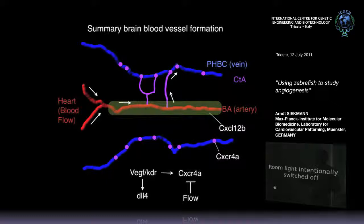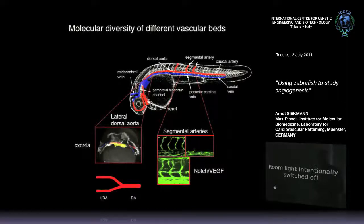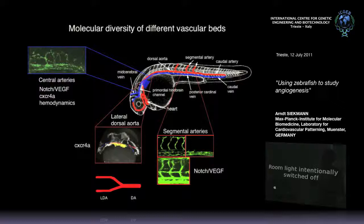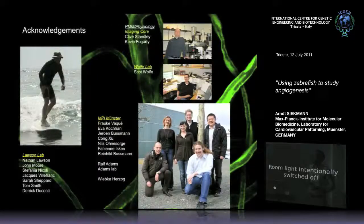We place blood flow, in addition to genetic components, as a key regulatory factor determining CXCR4A expression at later stages of embryonic development. To summarize, I showed our work on how VEGF and Notch signaling determine segmental artery formation in the trunk, how the chemokine receptor CXCR4A is important in formation of the first aorta, how these three genetic factors cooperate in brain vessel formation, and how a feedback loop via hemodynamics and physiological stimuli helps pattern and ensure functionality of later developing blood vessels.